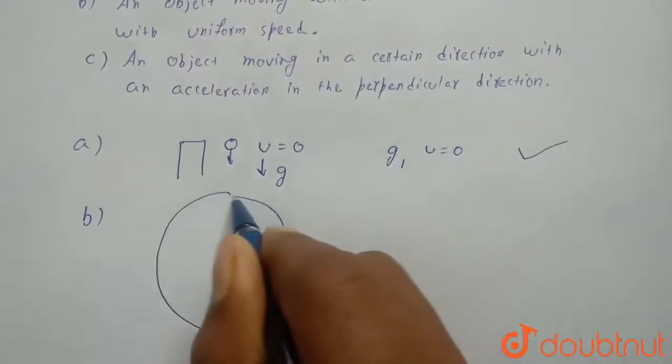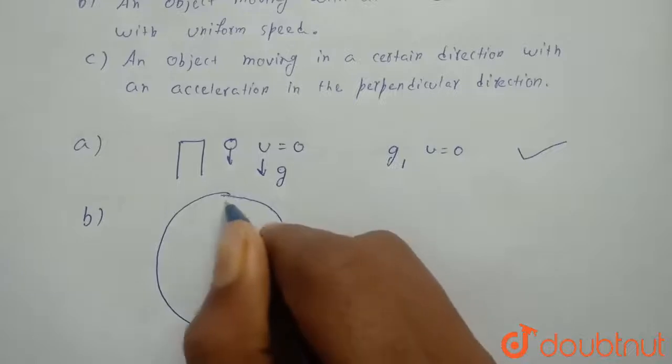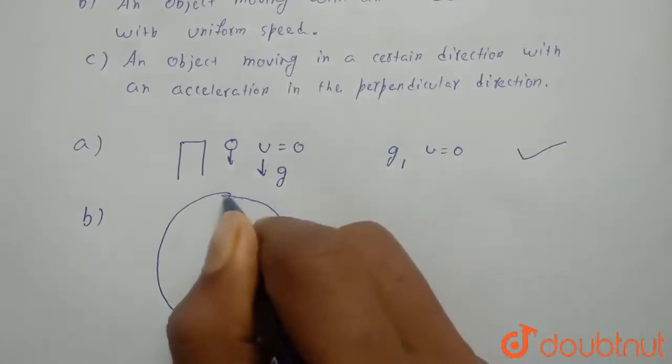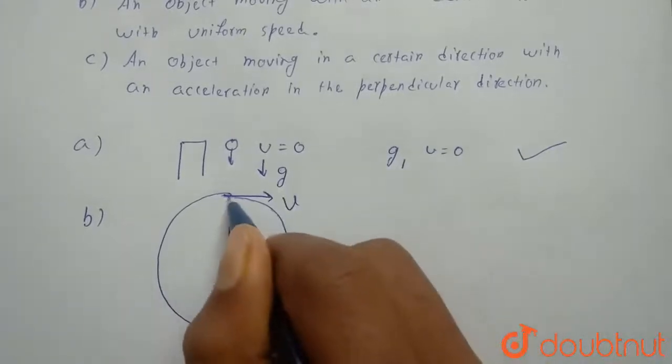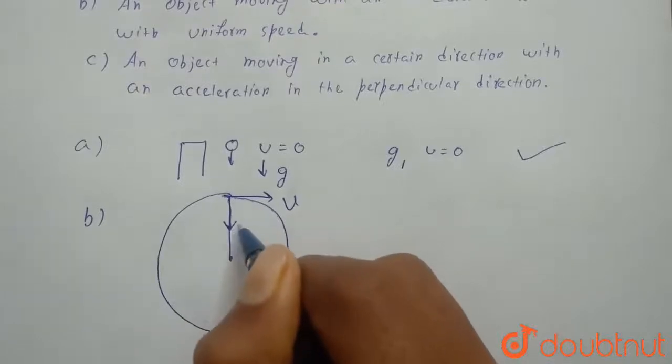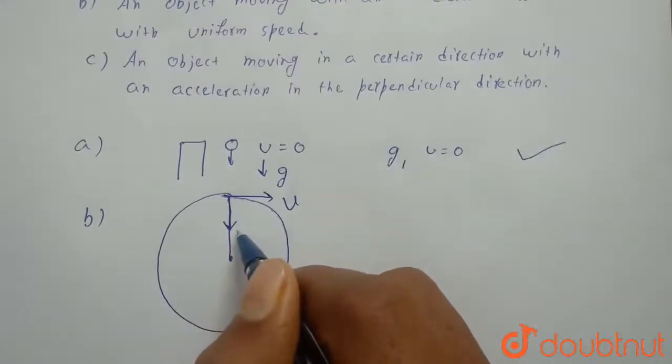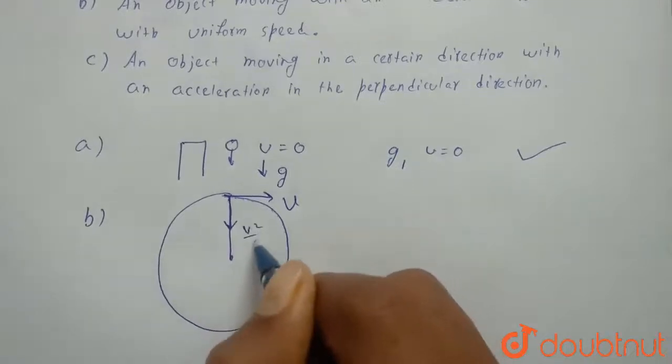Suppose an object is doing circular motion and its velocity is something V. Then its centripetal acceleration AC will be V squared by R.